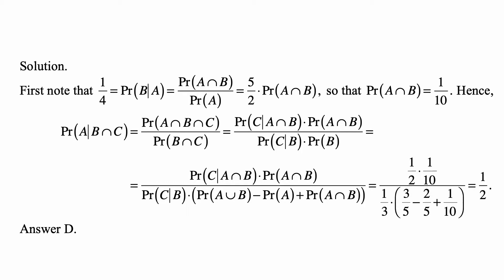Based on this, we have the probability of A given B intersection C, which is what we're looking for. By definition of conditional probability, this is probability of A intersection B intersection C divided by probability of B intersection C. We can write the numerator as probability of C given A intersection B times probability of A intersection B, and the denominator as probability of C given B times probability of B, again based on the definition of conditional probability.